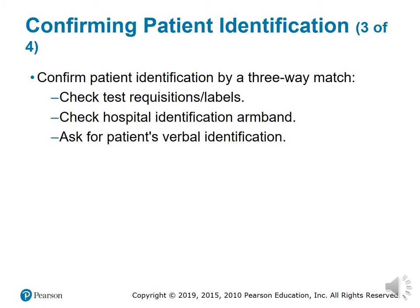You're going to confirm the patient's identification by a three-way match: check the test requisition, which should have all the patient's information and the tests to be performed; check the hospital identification armband that the patient receives when checked in; and ask for the patient's verbal identification — just say 'excuse me, can I get your name and date of birth?' It's that simple. Follow the steps every single time.